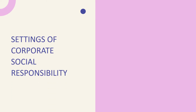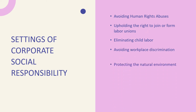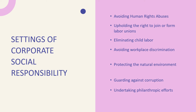Let's proceed to the settings of corporate social responsibility — the ways in which CSR can be applied. These include: avoiding human rights abuses, upholding the right to join or form labor unions, eliminating child labor, avoiding workplace discrimination, protecting the natural environment, guarding against corruption, and undertaking philanthropic efforts. These are examples of how corporate social responsibility can be applied in companies or organizations.